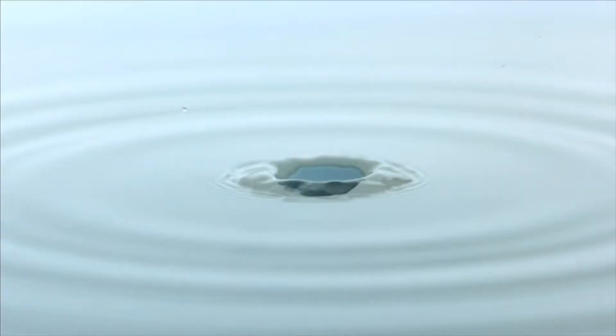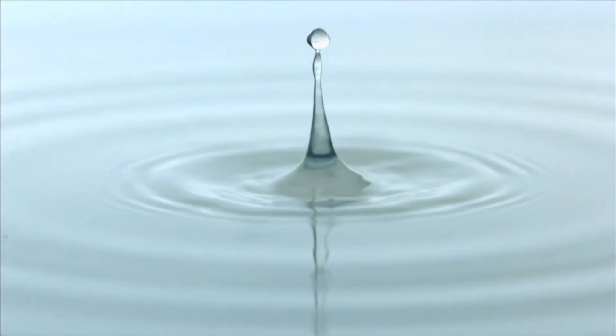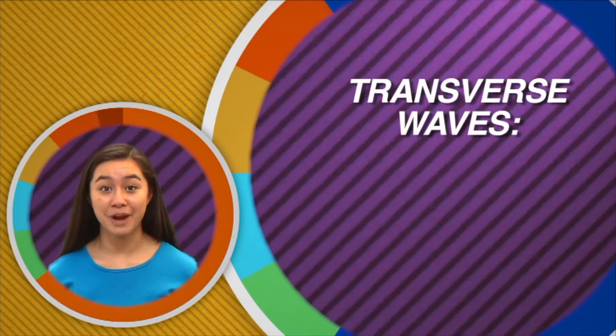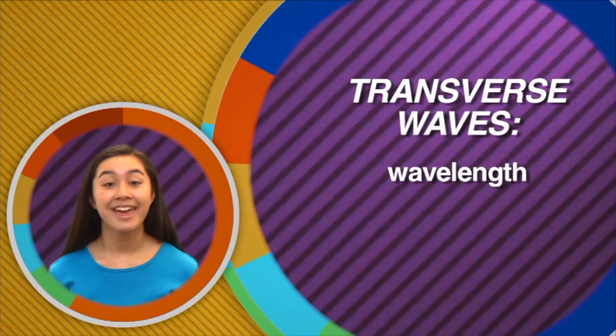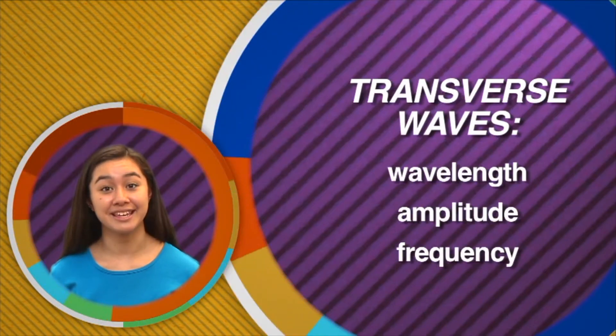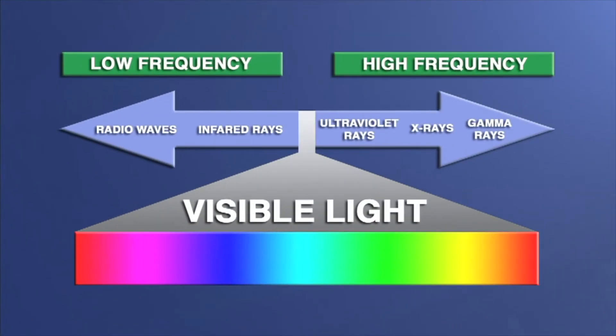Let's take a moment to review what you have learned so far. You know that light is actually a visible form of energy, and that light travels in waves called transverse waves. Those waves have special properties that include wavelength, amplitude, and frequency. You also learned that light waves don't require a medium in order to travel, and that light is part of the electromagnetic spectrum.